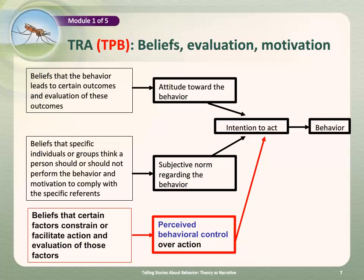The theory of planned behavior adds another piece to this model: the idea that some behaviors may not be under our control. There may be things that stand in your way even if you want to do something. For example, can I get an insecticide-treated net if I want one? Does the local clinic have malaria prophylaxis drugs? Can I get my wife to the clinic three times during pregnancy for malaria treatment? These factors and what you believe about them also influence your motivation. If you feel helpless to perform a behavior, your intention to act will be lower.